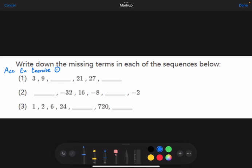So write down the missing terms in each of the sequences below. In the first sequence, we have 3, 9, blank, 21, 27, blank.